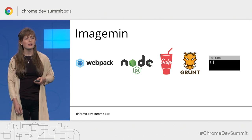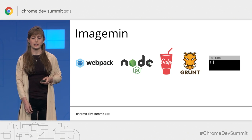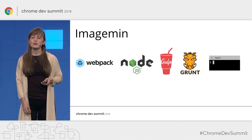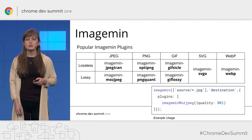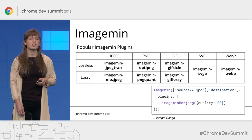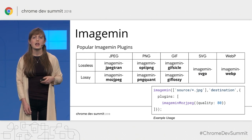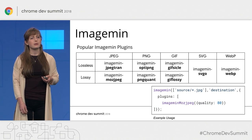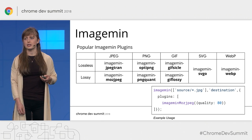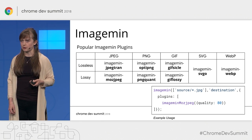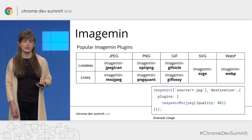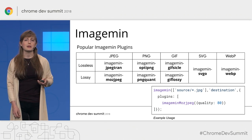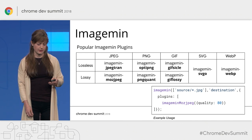By far the most popular tool for image compression is ImageMin, and it can be used with just about everything. ImageMin is used in conjunction with various ImageMin plugins — you can think of these plugins as implementations of different image compression algorithms. On the screen I've put the most popular ImageMin plugins for various use cases, though these are by no means the only ones available.